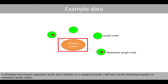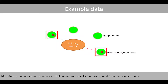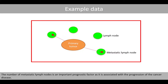To illustrate how Poisson regression works with variables on a categorical scale, I will use the following example on metastatic lymph nodes. When cancer cells from the primary tumor start to spread to other parts of the body, it is called metastasis. Metastatic lymph nodes are lymph nodes that contain cancer cells that have spread from the primary tumor.